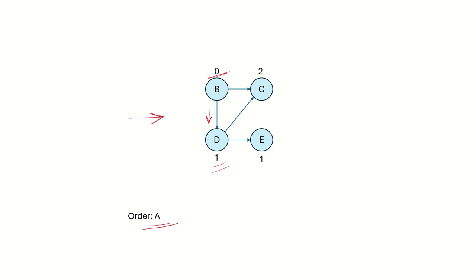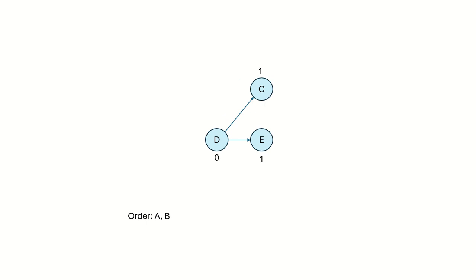Again we choose the vertex with in-degree 0, meaning all its dependencies are done. We see that B is that vertex. So we choose B and remove it along with its outgoing edges, add B to our ordering, and this is what we are left with.